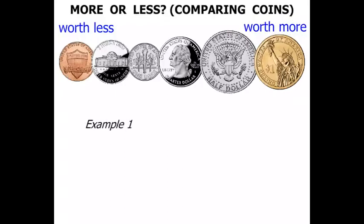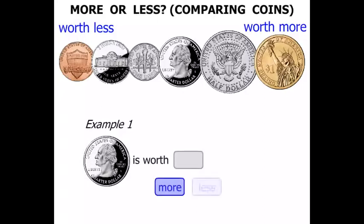Let's look at example one. We've got this quarter dollar. The quarter is worth more or less than a dime.